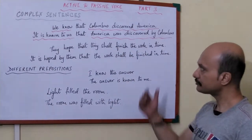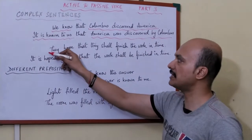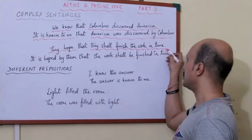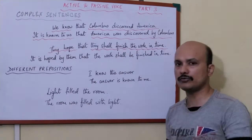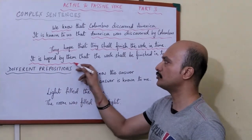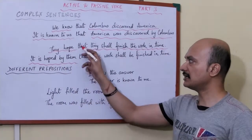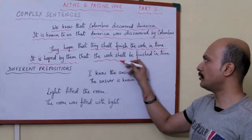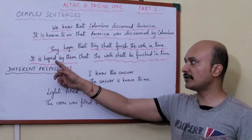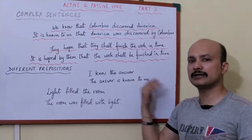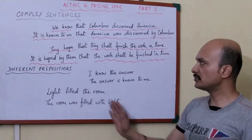Next: 'They hope that they shall finish the work in time.' First part is 'they hope', second part is 'they shall finish the work in time'. 'They hope' becomes 'it is hoped by them'. The clause word 'that' remains. 'They shall finish the work in time' becomes 'the work shall be finished in time'. Note that 'by them' is not written again in the second part because it has already been stated, so there is no need to repeat it.